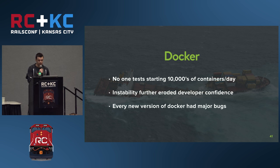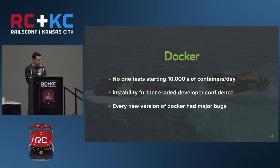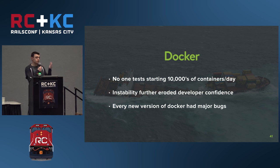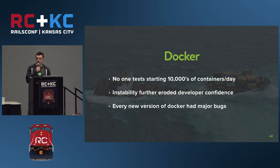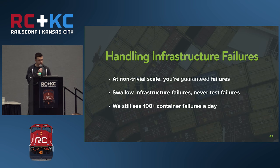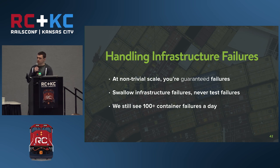Docker — the gift that keeps on giving. No one tests starting tens of thousands of containers a day, and Docker doesn't handle that gracefully — which is exactly what we were doing. We ran into instability: random network timeouts, kernel bugs where Docker refused to boot if AppArmor was on the machine, and concurrent pulls causing deadlocks. Every new Docker version had major bugs — fixing old ones while introducing new ones. Since we didn't account for these failures, builds would fail even with a green test suite. The solution was to identify infrastructure failures and swallow them.